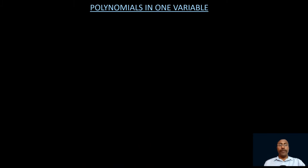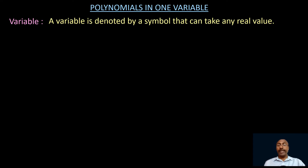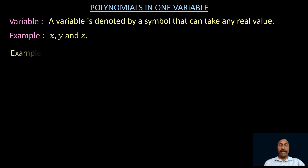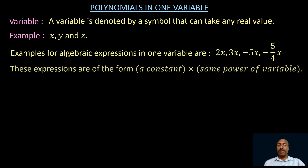Let us discuss polynomials in one variable. A variable is denoted by a symbol that can take any real value — for example, x, y, and z. The value of a variable is not constant. Examples of algebraic expressions in one variable are 2x, 3x, minus 5x, and minus 5/4 · x. These expressions are of the form: a constant multiplied by some power of a variable.